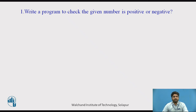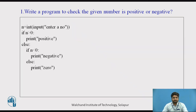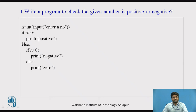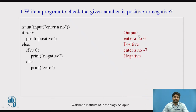Write a program to check whether a given number is positive or negative. I have taken n as a variable. If n is greater than 0, print 'positive'; else, if n is less than 0, print 'negative'; else print 0. This is an if inside another if — a nested if example. If we enter 6, it shows 'positive'; if we enter -7, it shows 'negative'.